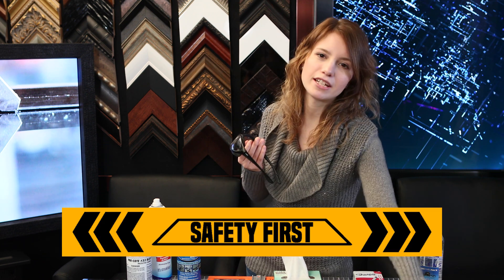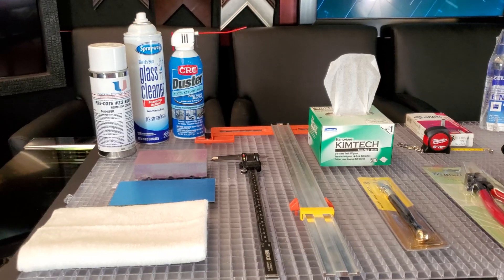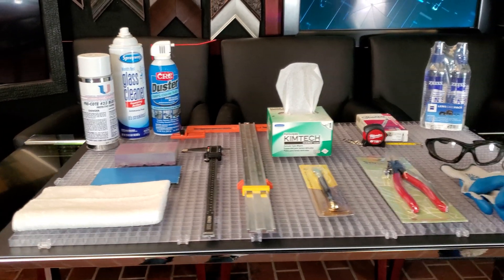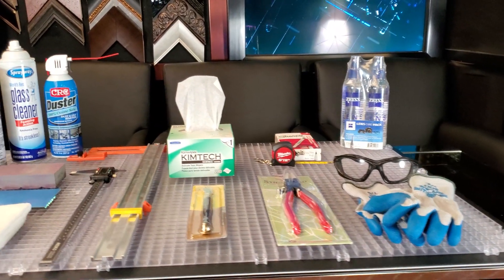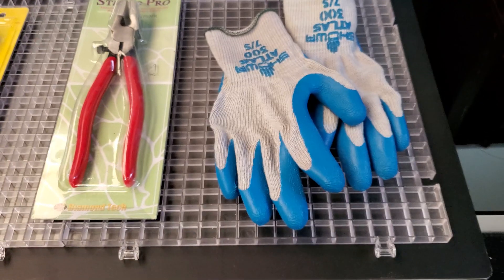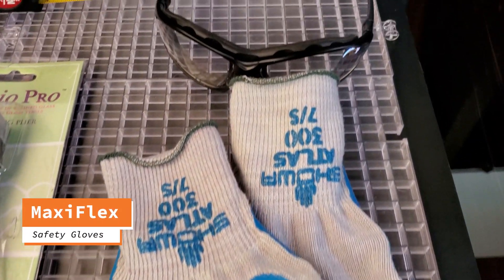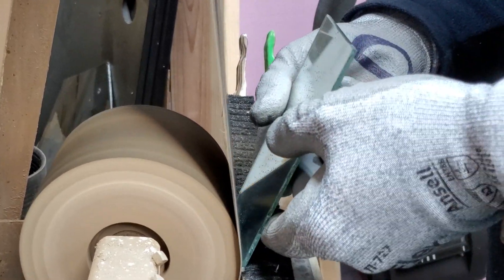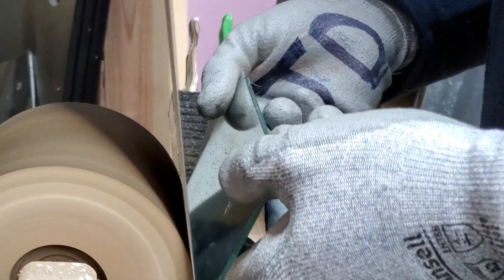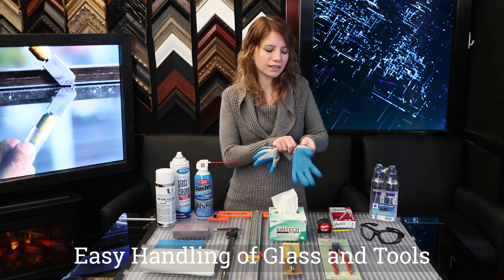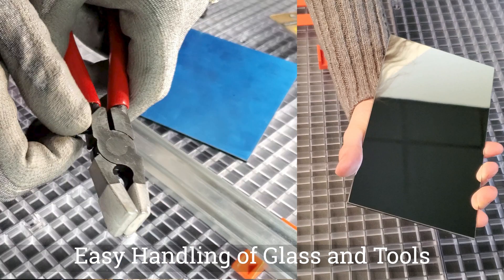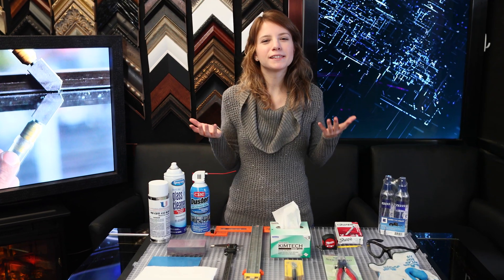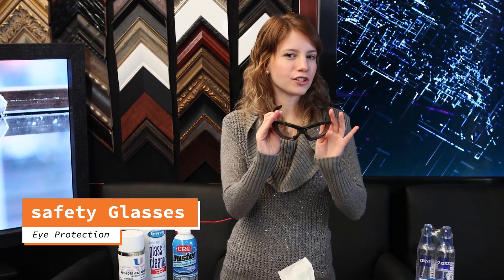Before you start cutting, you will need some critical safety gear. I'm going to show you my favorites that have been tried and tested in our facility. For safety gloves, we like to use the brand MaxiFlex. The advantage of using these gloves is that they are much more flexible than any other gloves, which allows easy handling of both the glass and the tools. We also can't forget about eye protection.